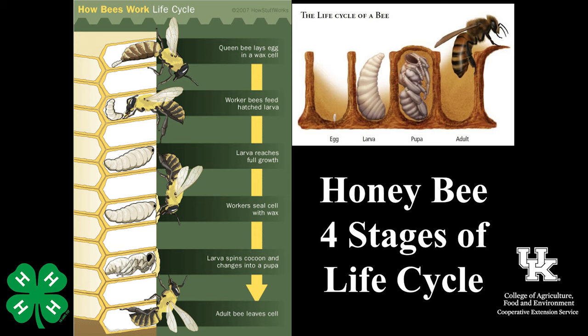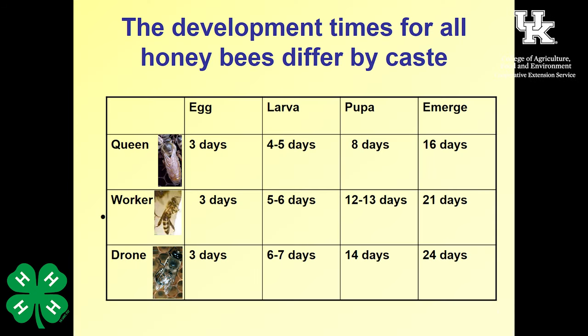When a worker bee emerges, she'll eat because she hasn't eaten in a while, then come back and clean out the cell to get it ready for a new egg. This chart breaks down how long they're in each stage: all three types spend three days as an egg. The queen emerges after 16 days total, the worker bee after 21 days, and the drone after 24 days.